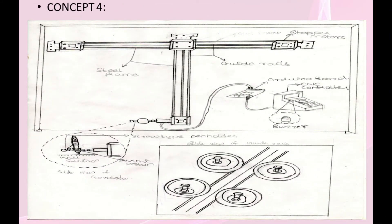Concept 4: This concept consists of TV frame, guide rails, Arduino board, CNC controller, and screw type pen holder. TV frame holds the entire system. Guide rails is used for movement in X and Y axis. Arduino and CNC controller is used for automation purpose and buzzer is used for indication unit.